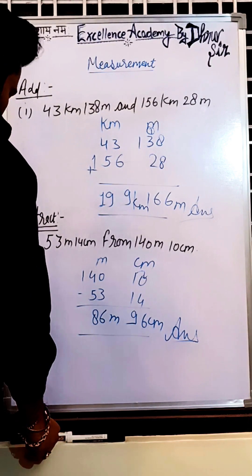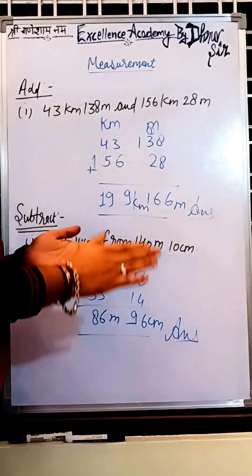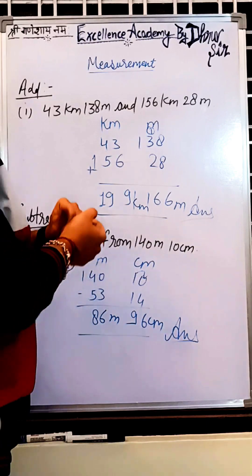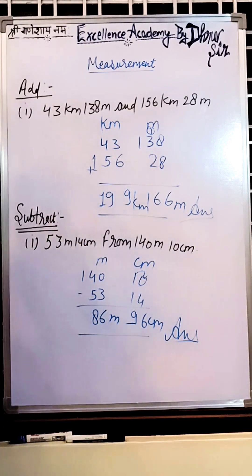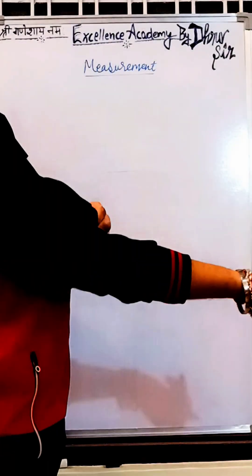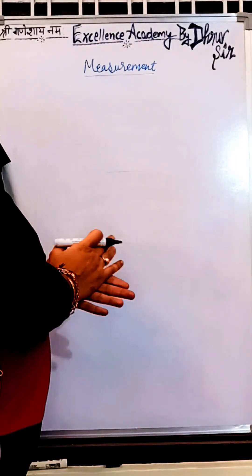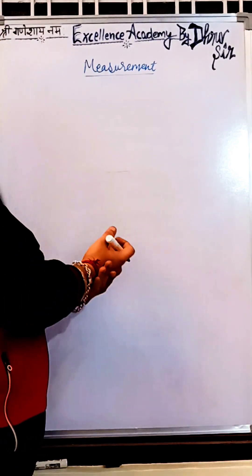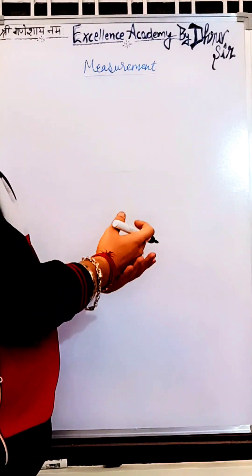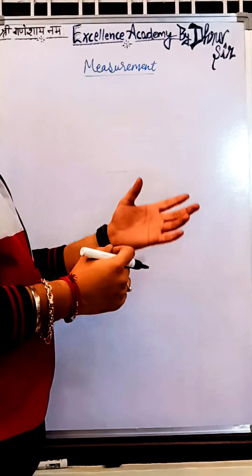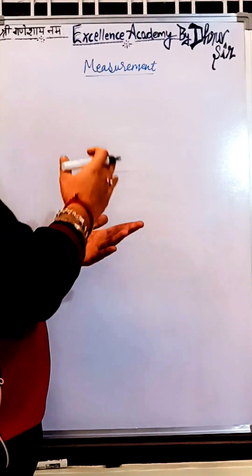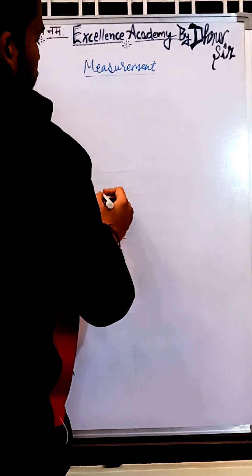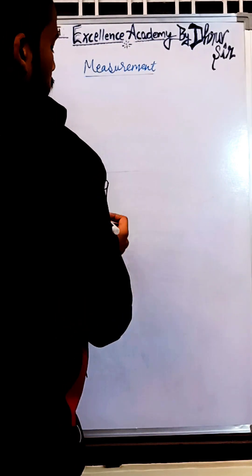Now let us move on to how to change meter, kilometer, and all into hectometer and decameter. The standard unit to measure weight we all know is gram. Short form is 'g'.